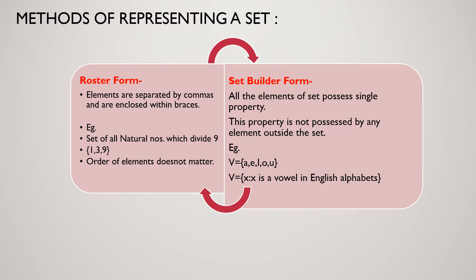This property in set builder form is not possessed by any element outside the set. For example, if we talk about the vowels, then the set containing a, e, i, o, u — we can define this as: V equals all x such that x is a vowel in English alphabets.